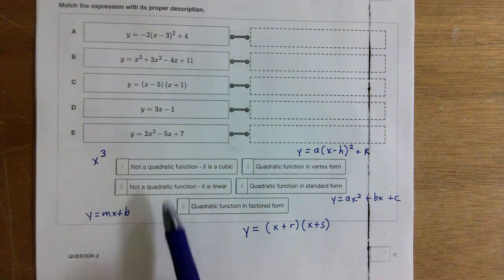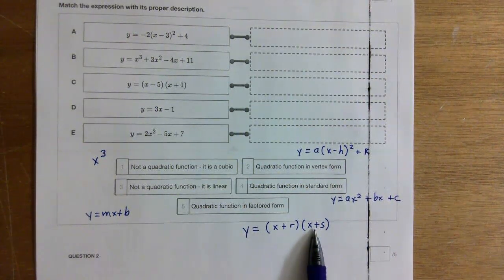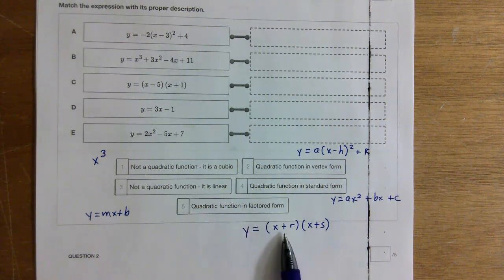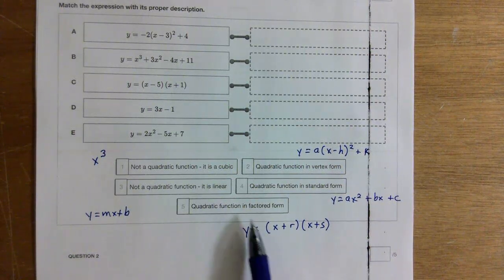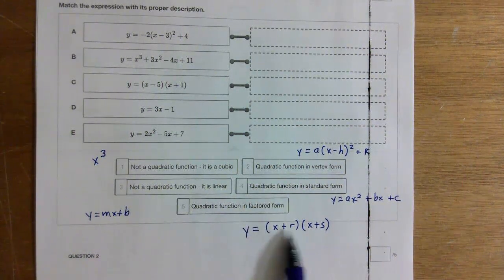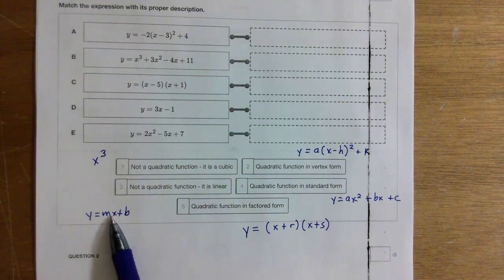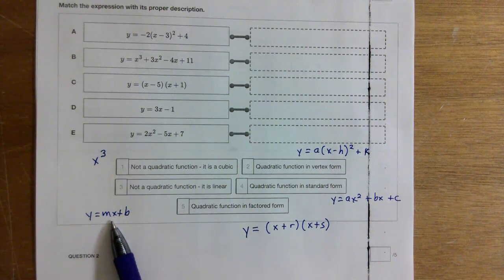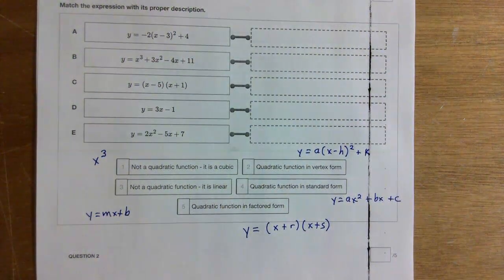Next, go to the one that's linear. Remember, these are two linear factors multiplied together, making a quadratic — when you multiply them you get x squared. But a linear function just has an x, not x squared. So find the one up here that just has an x.